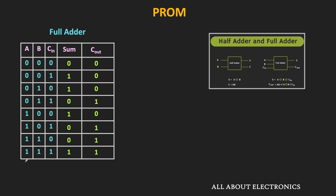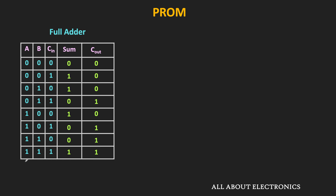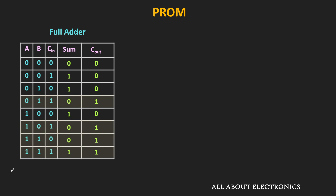We have already covered the full adder and full subtractor circuits earlier. This is the truth table of the full adder circuit. As you can see, the sum output is 1 for four different min terms — that is min terms m1, m2, m4, and m7. Similarly, the carry output is also 1 for four different min terms — that is min terms m3, m5, m6, and m7. In this way, we get the expressions for the sum and carry output of the full adder in SOP form.